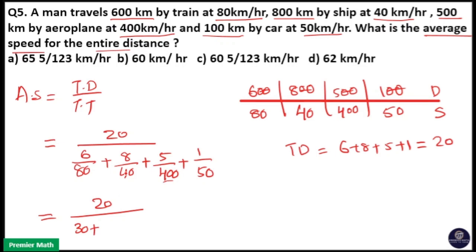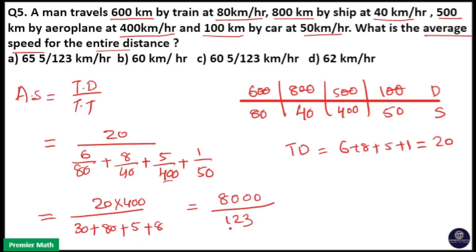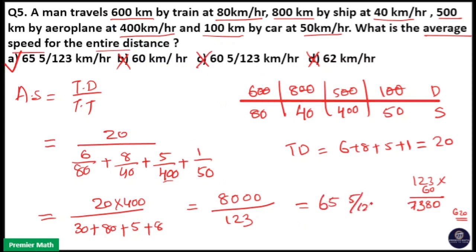So 20 parts divided by: 400 divided by 80 equals 5, so 5 × 6 = 30; 400 divided by 40 equals 10, so 10 × 8 = 80; 400 divided by 400 = 1, so 1 × 5 = 5; 400 divided by 50 = 8, so 8 × 1 = 8. The denominator becomes 30 + 80 + 5 + 8 = 123, and the numerator becomes 20 × 400 = 8000. So average speed = 8000 divided by 123, which is approximately 65.04 km/h. Since 8000 is not completely divisible by 123, some options are eliminated. Option A is your answer.